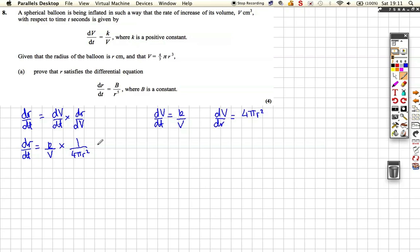So when we put that together, we need an expression for v as well. Let's put this expression for v in. So we're going to have that denominator flips to the top, so you're going to have 3k over 4 pi r cubed, and that's times by 1 over 4 pi r squared.